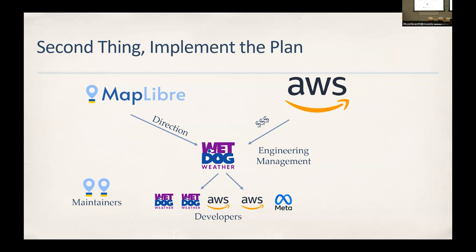We finished the plan early this year and moved to implementation. Stamen stepped aside and we took over management. My company, Wet Dog Weather, handles engineering management. Two of my people and two AWS people participate in development, plus one person from Meta. We also have two paid maintainers from the MapLibre community who are getting up to speed on maintaining the toolkit. Everything we do will be handed over to them.